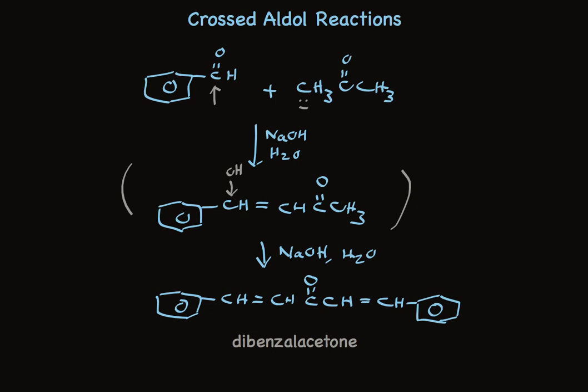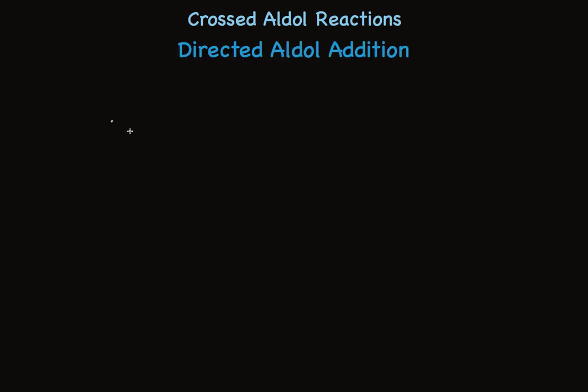There is something else we can do that broadens our ability to use ketones in aldol reactions. It's called the directed aldol. Here's a common example. 2-methyl cyclohexanone has two different alpha-carbons.